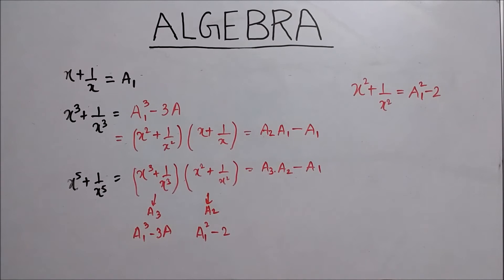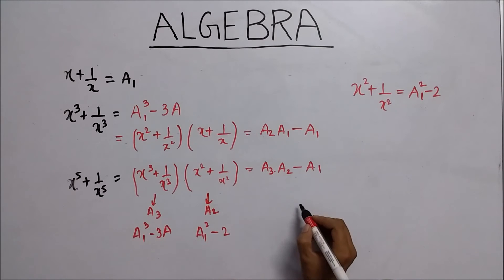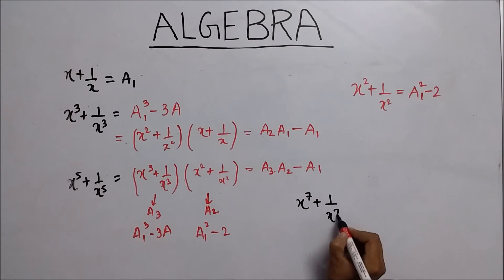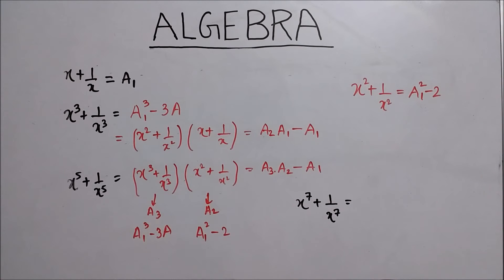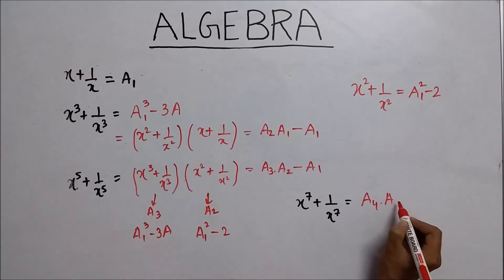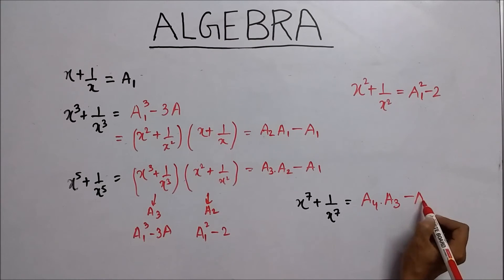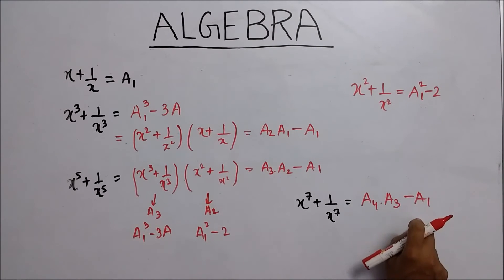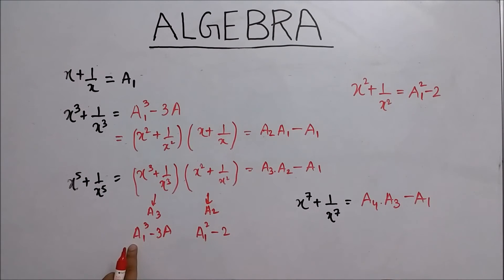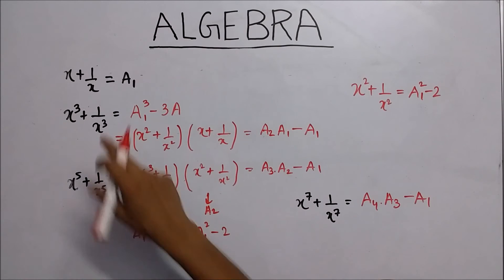Similarly, if you have to find the value of x to the power 7 plus 1 upon x to the power 7, just write a4 times a3 minus a1. You know a1 is x plus 1 upon x, a3 equals a1 cubed minus 3a1, and you can find the value of a4 in a similar way.